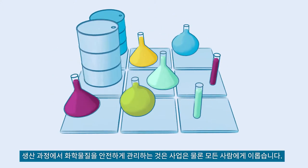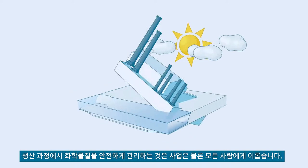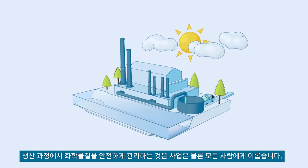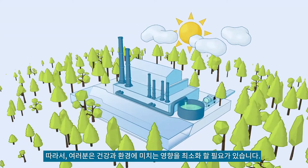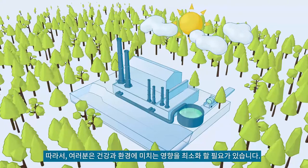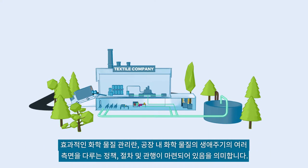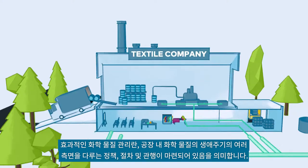Safely managing chemicals in production is good for business and beneficial for everyone. Therefore, you need to minimize the chemical's harmful impact on health and environment. Effective chemicals management means that policies, procedures, and practices are in place that address the different aspects of the life cycle of chemicals in the factory.